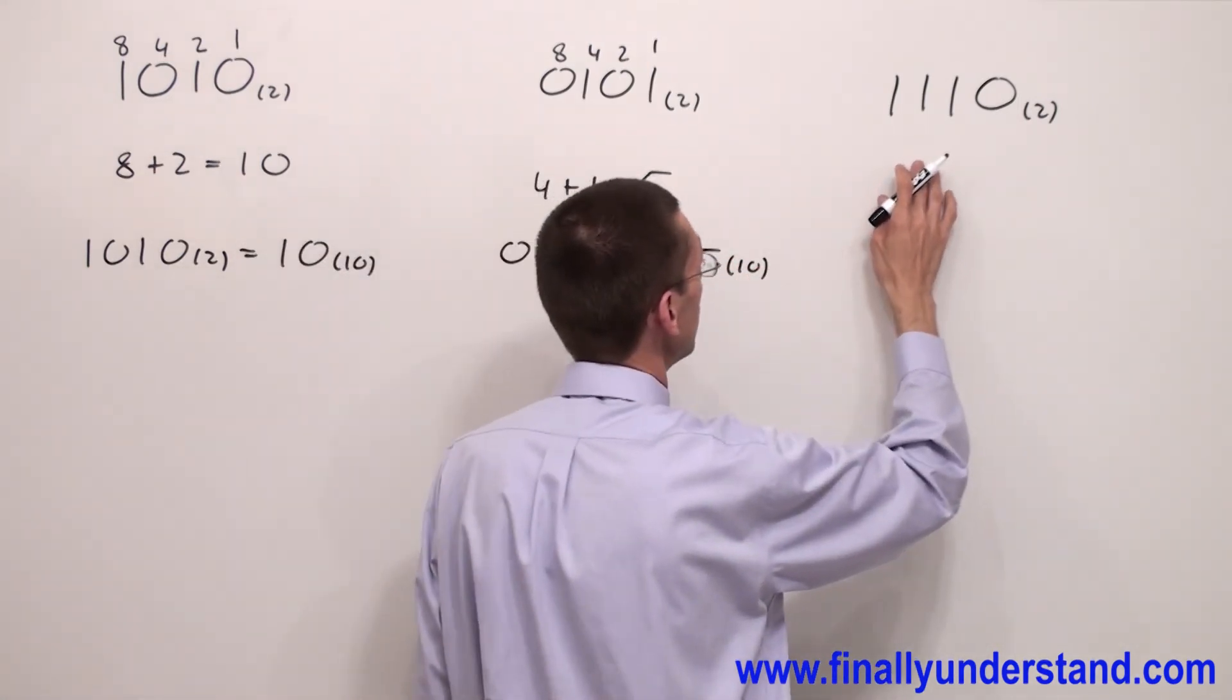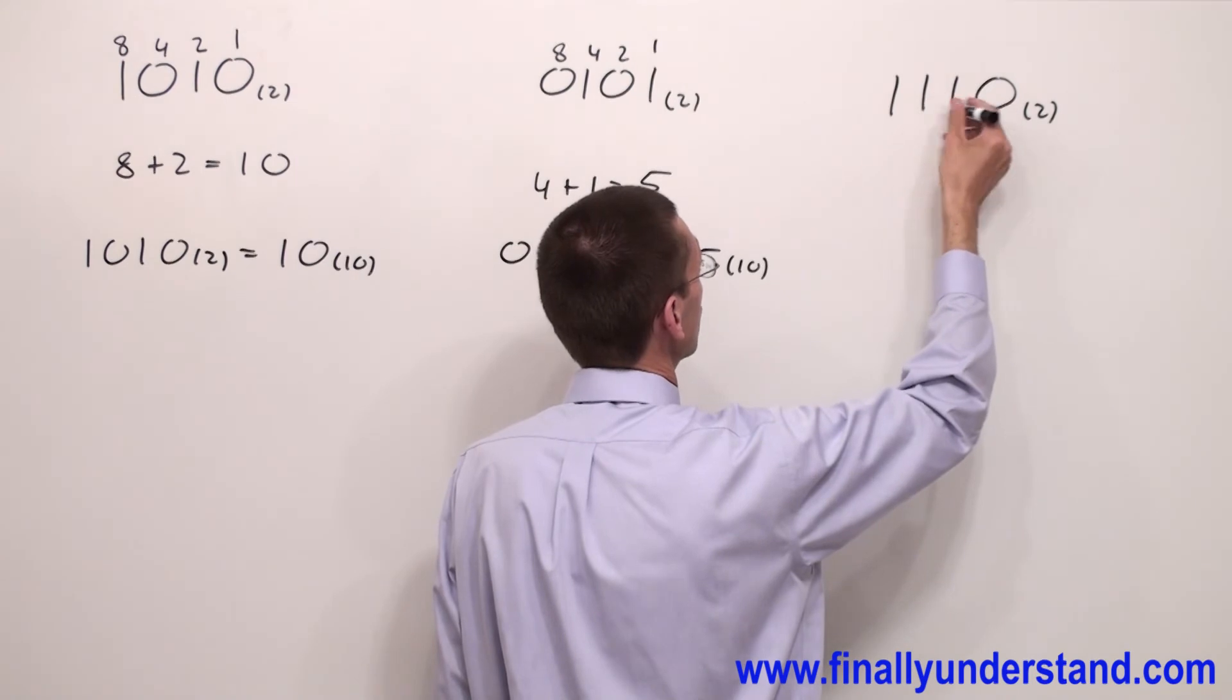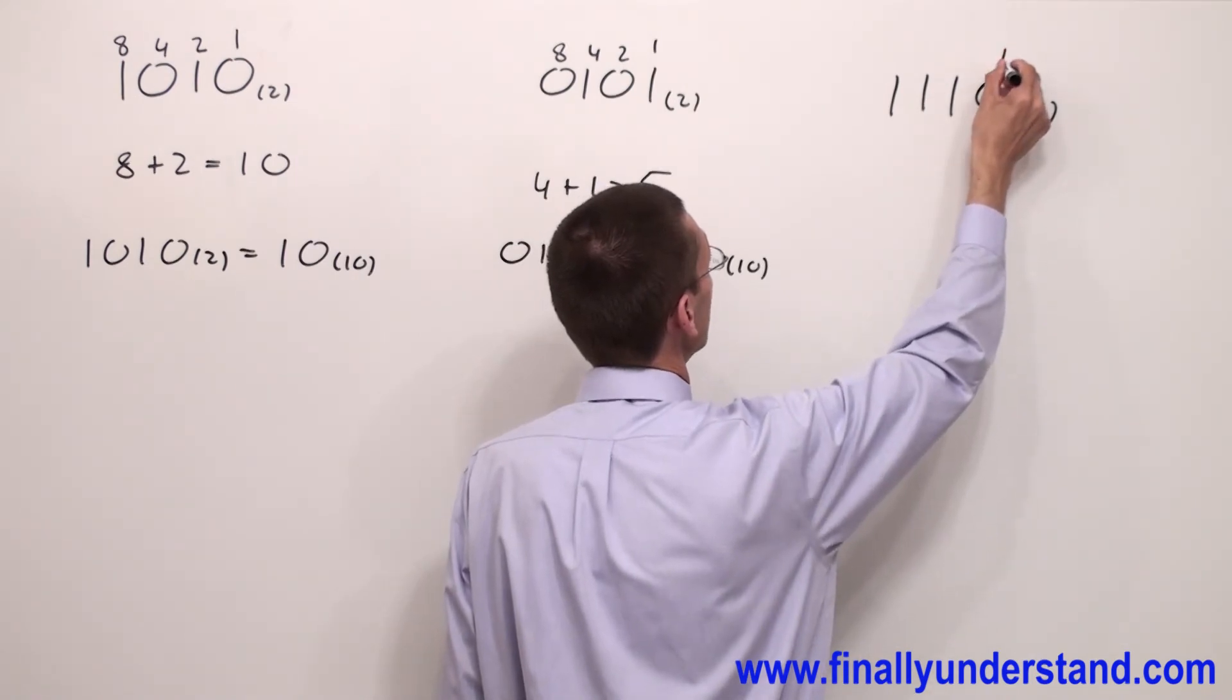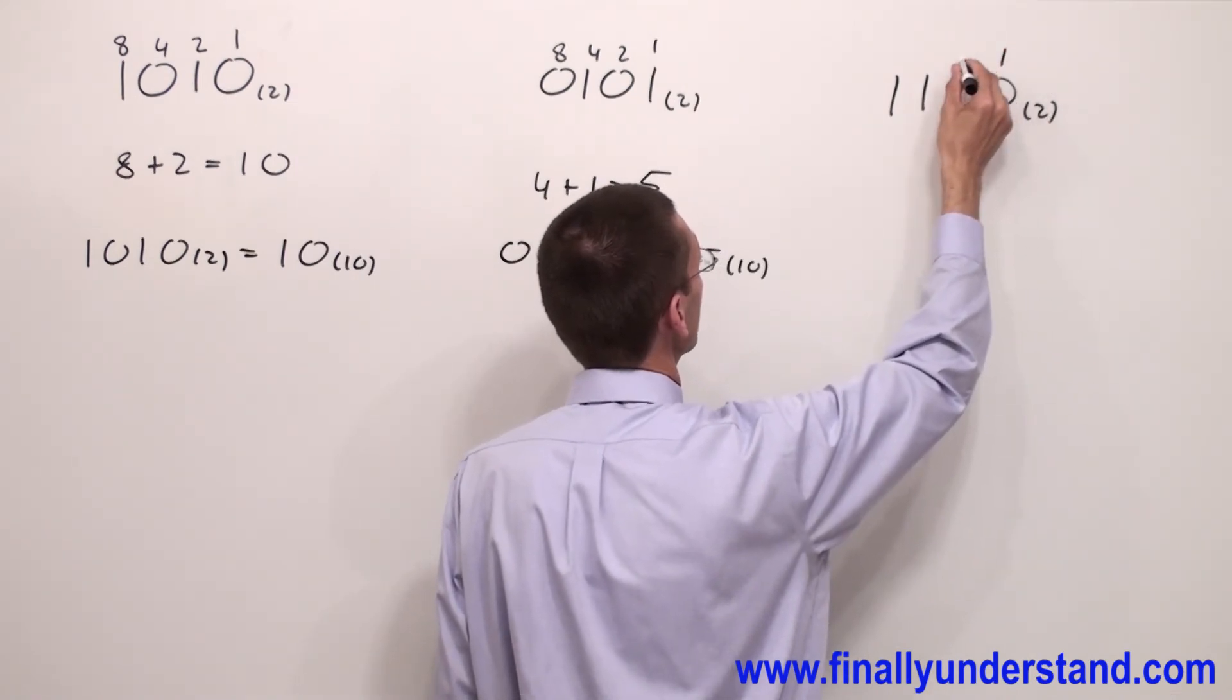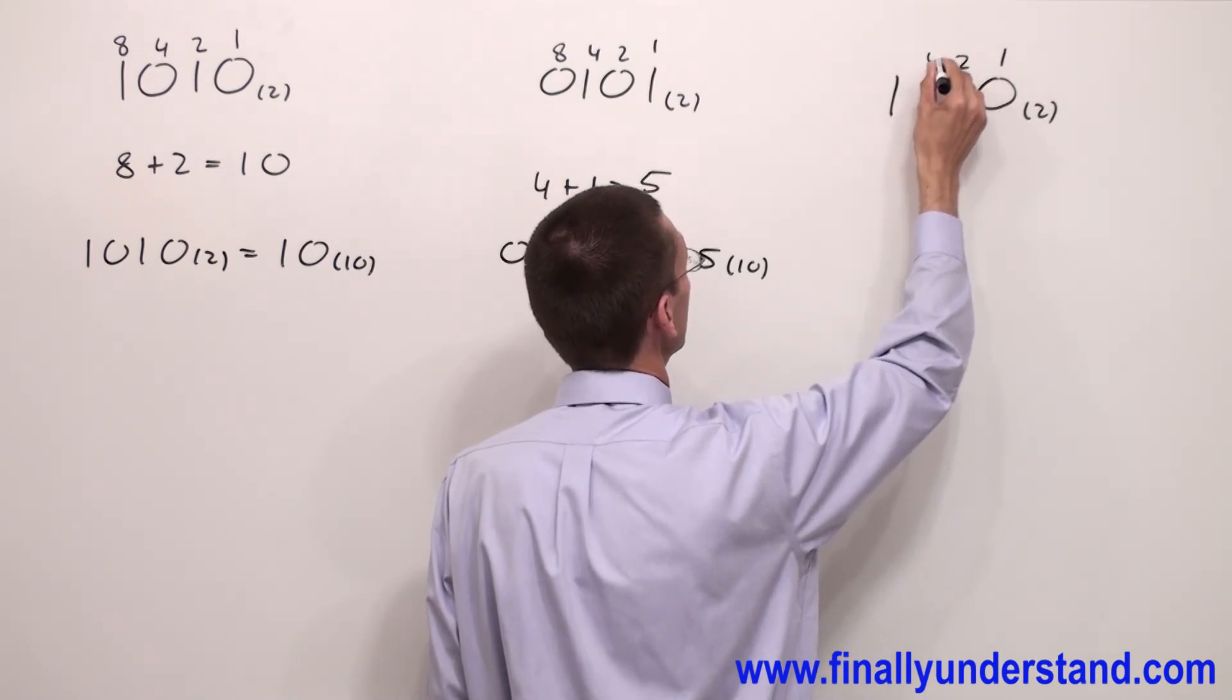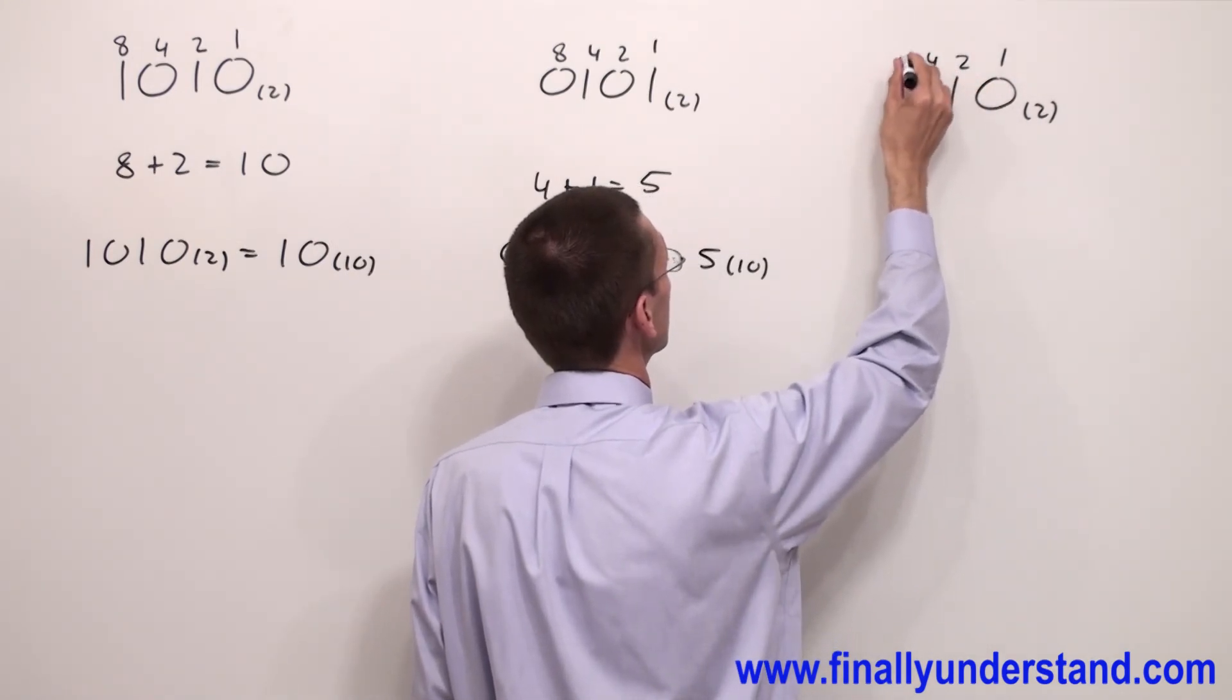Let's take a look at this example. Again, we have to write the weights. So, I have one. Next one is going to be double of the previous one, two. Double of two is four. Double of four is equal eight.